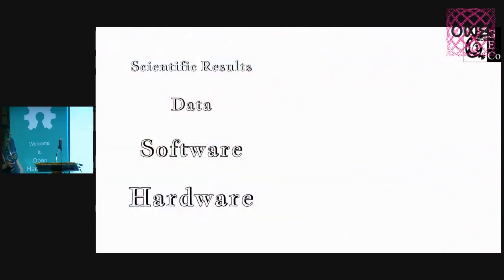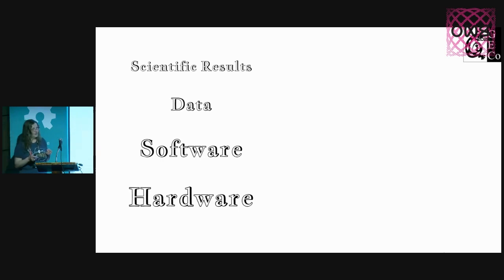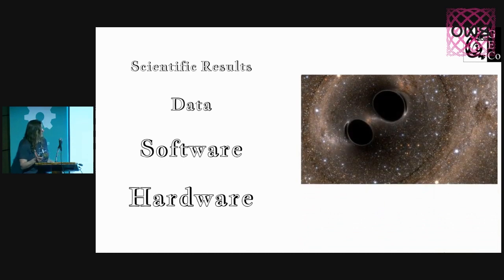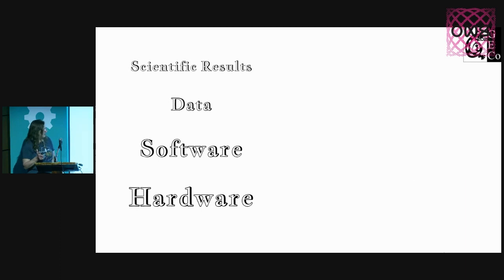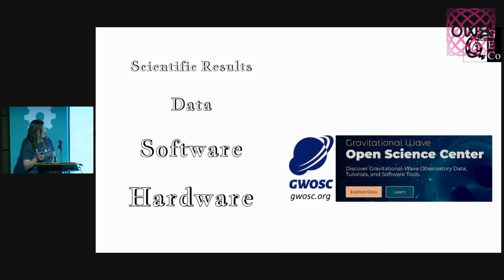This is what I've worked on with students in the past year as one of the fellows. Open science is very important for our collaboration. We publish papers and scientific results like those colliding black holes. The data is also public — not right away, it takes about 18 months — and we make our software and data available through the Gravitational Wave Open Science Center, where you can find our data and software to analyze it.